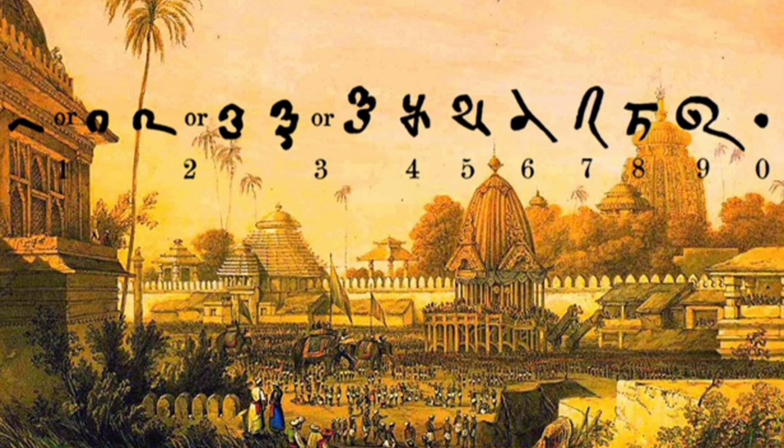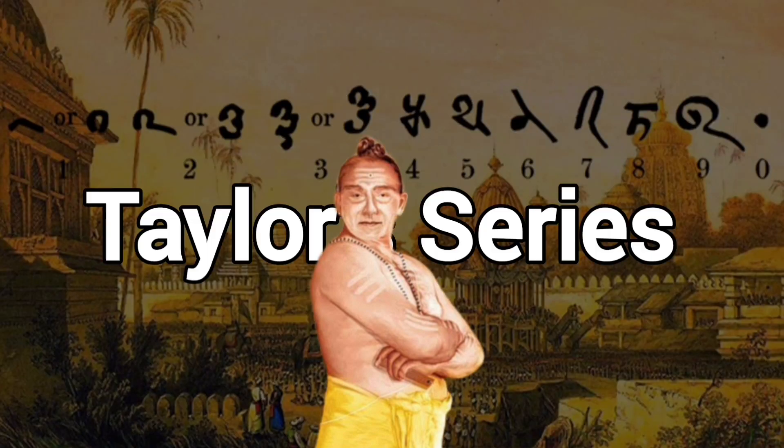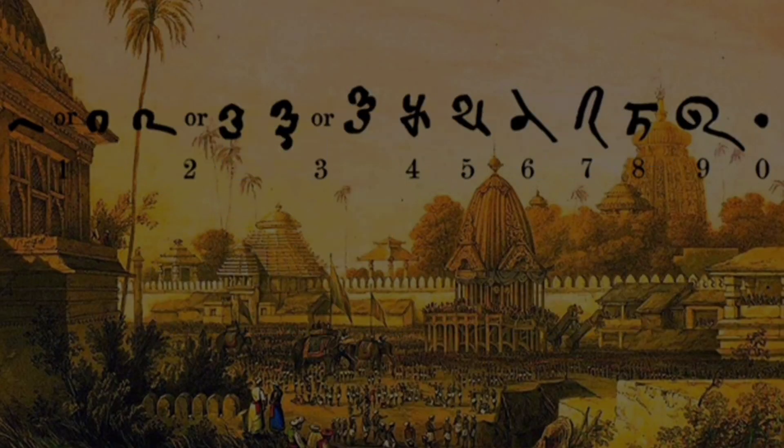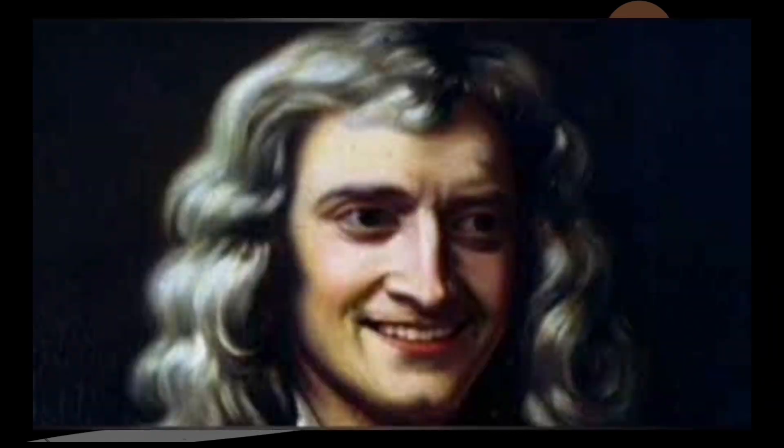There was a Kerala School of Astronomy and Mathematics in 14th century, where Madhava of Sangamagrama stated components of calculus such as Taylor series and infinite series. And as a rule of scientific priority, three of the Taylor series are now renamed as Madhava series, which were later independently rediscovered in 17th century by Isaac Newton.